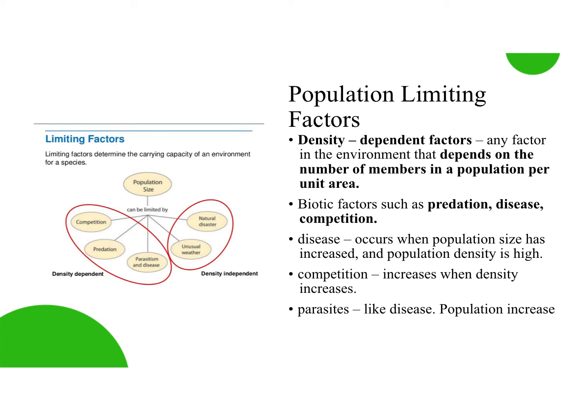We see this right now with COVID — is anyone following India in the news? India is extremely densely populated, and it is just spreading — like 400,000 people a day are getting it. Somewhere like where we are, we're more spread out, so it just doesn't transfer as easily because we have more space between us. That's not just a human factor — the same thing goes for other plants and animals.